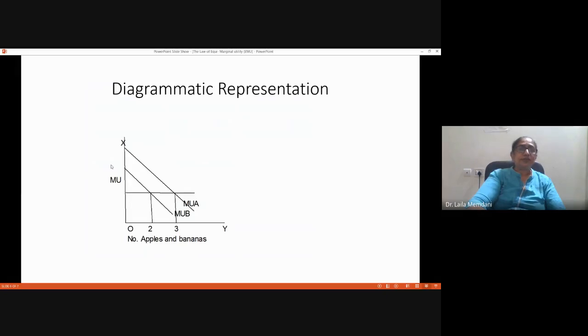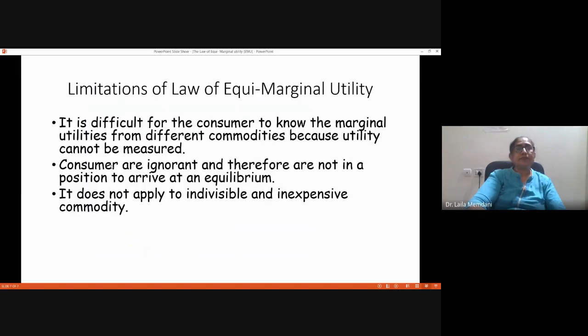Limitations of the law of equi-marginal utility: It is difficult for the consumer to know the marginal utilities from different commodities because utility cannot be measured. Consumers are ignorant and are not in a position to arrive at an equilibrium. It does not apply to indivisible and inexpensive commodities. Like if you are buying a sofa set, you cannot apply this law because you are not going to consume it again and again - once you buy it will last for years together.